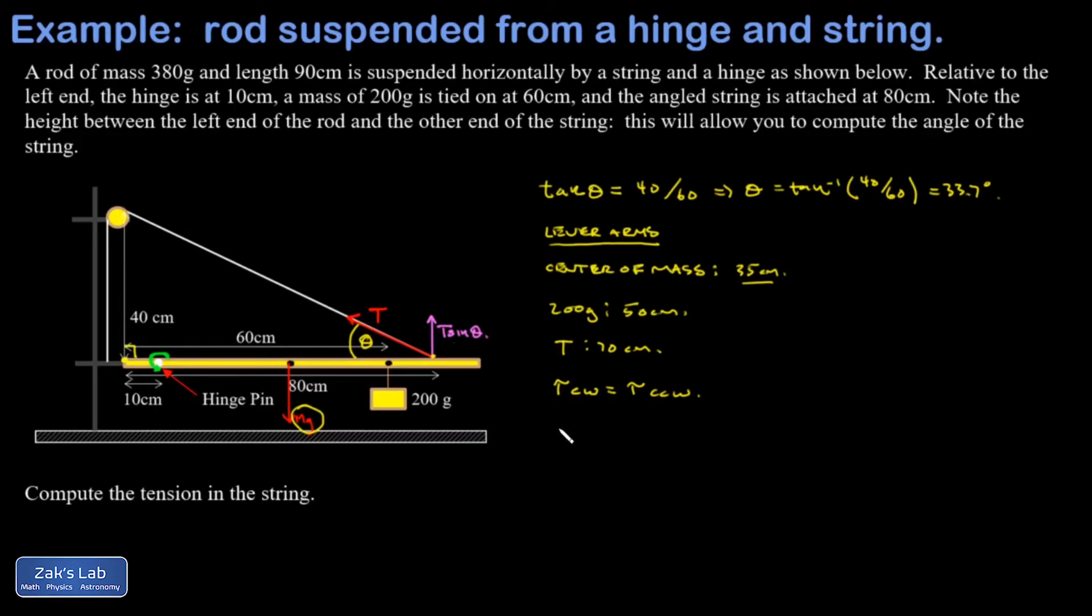So I'm going to have mass of the stick 0.380 kilograms times G. That's the force of gravity on the center of mass times 35 centimeters. And I'm going to go ahead and use SI units this time. You don't actually have to.